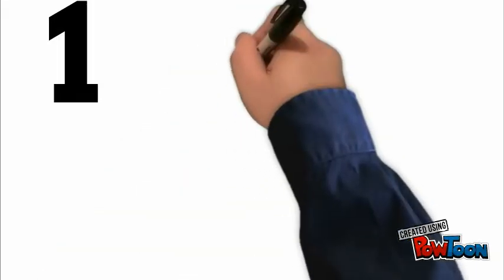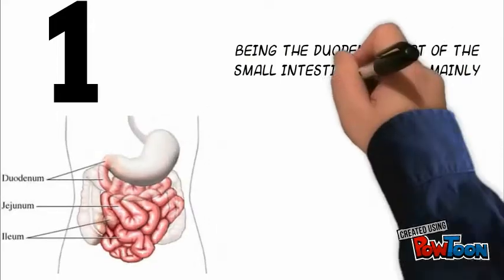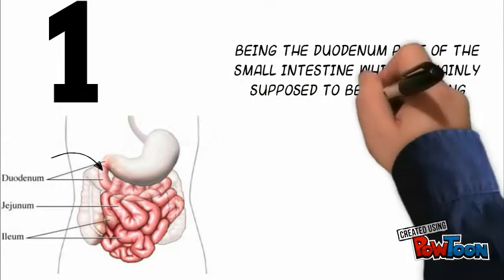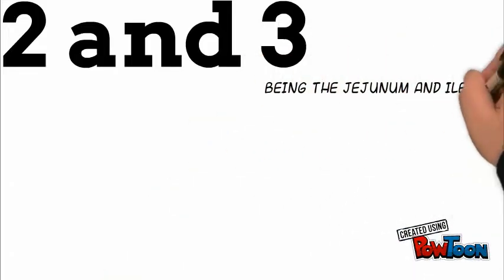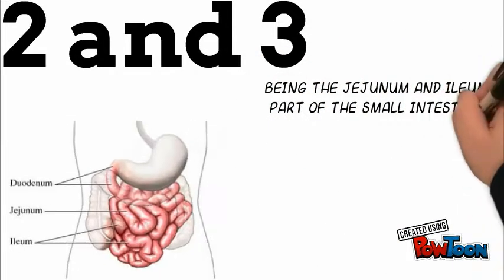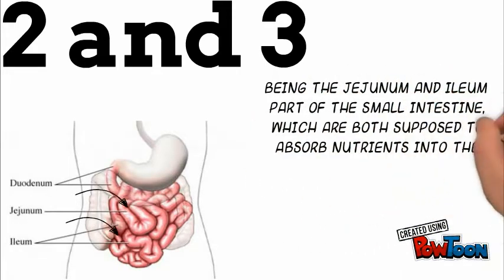So, there are one, two, three parts of the small intestine. One being the duodenum part of the small intestine, which is mainly supposed to be the breaking down process. Two and three are the jejunum and ileum parts of the small intestine, which are both supposed to absorb nutrients into the bloodstream.